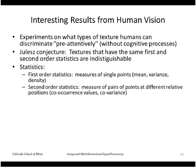First order statistics are measures of single points, such as the mean or variance, the density of points. Second order statistics are measures of pairs of points, such as the co-occurrence matrix.